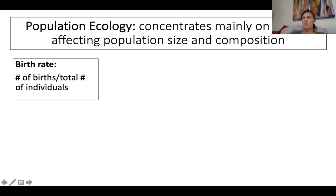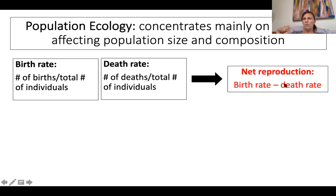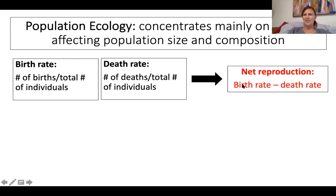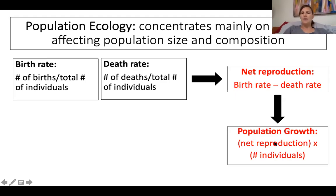This involves a couple of factors. The first is birth rate — the number of births over the total number of individuals in the population. There's also a death rate — number of deaths per total number of individuals in the population. To get the net reproduction, we subtract death rate from birth rate: birth rate minus death rate. Using that, you can calculate population growth — whether it's growing or shrinking — by multiplying net reproduction by the number of individuals.